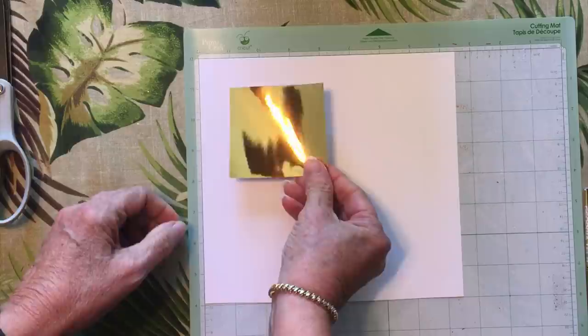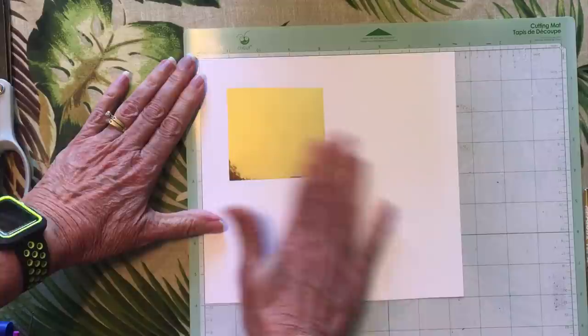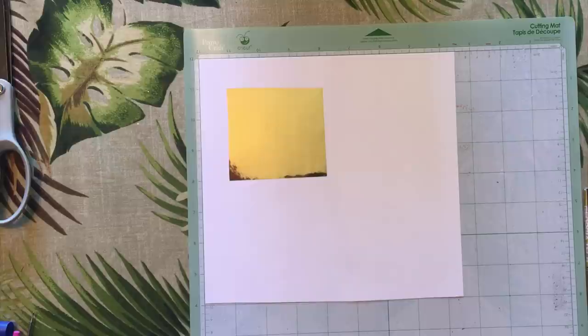Place the cardstock you'd like to foil on your mat face up. Position a piece of foil on top, shiny side up, where you'd like the design to appear. The foil isn't sticky, but it does seem to cling to paper, so I haven't even needed to tape it down.